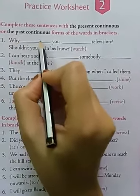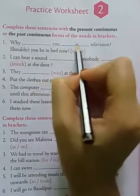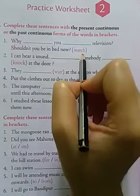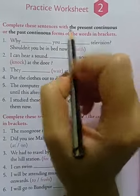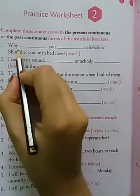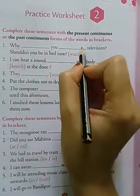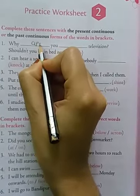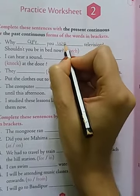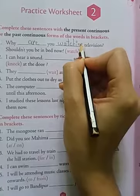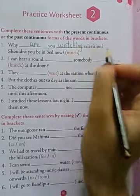First one: you dash television. Shouldn't you be in bed now? In the bracket: watch. With the help of 'watch' you have to frame a sentence. So how are you going to make it? Why are you watching? Watching — spelling: W-A-T-C-H-I-N-G. Why are you watching television?